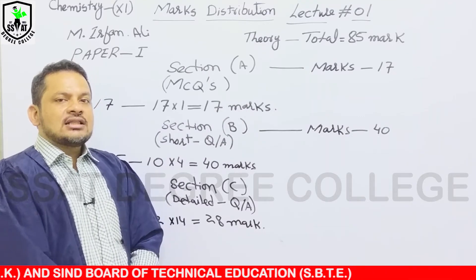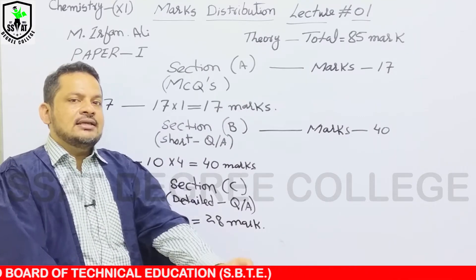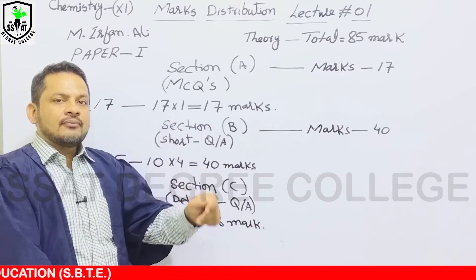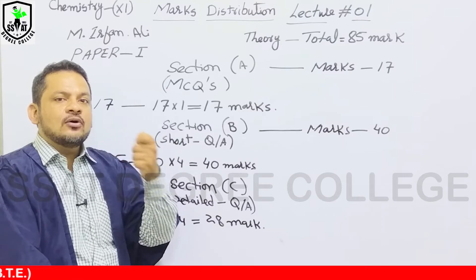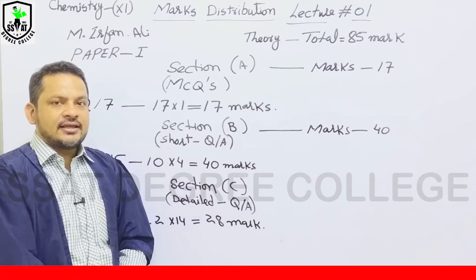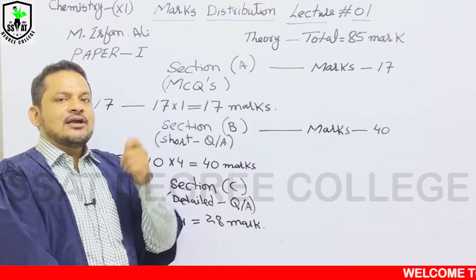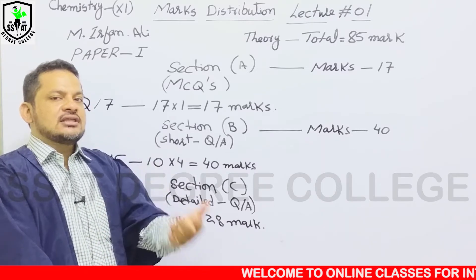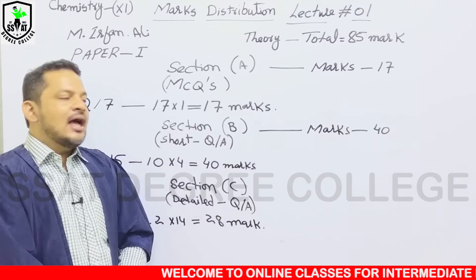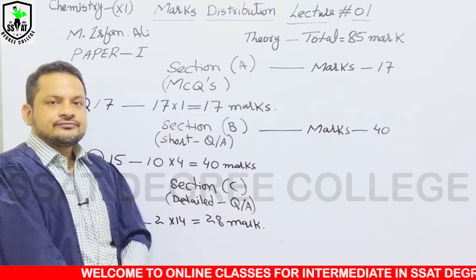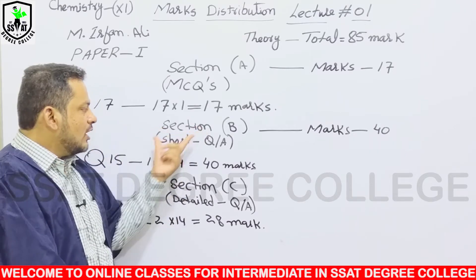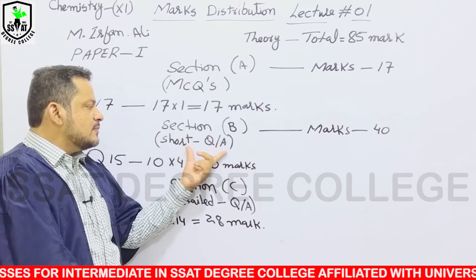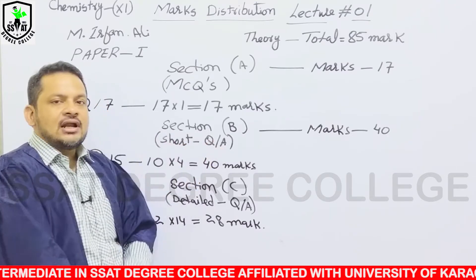जैसे ही 20 Minutes खतम होंगे Bell होगी, और Section A का Question Paper वापस ले लिया जाएगा। उसके बाद आपको Section B और Section C Provide कर दिये जाएंगे। Section B Short Questions and Answers का होगा — इसमें आपको Short Questions Attempt करने होंगे।